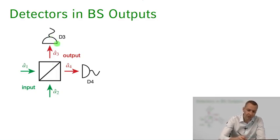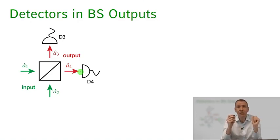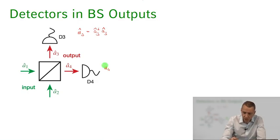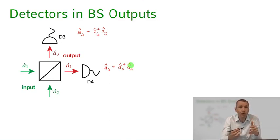We're going to put two photodetectors here: one that measures the photocurrent on detector 3 and one that measures the photocurrent on detector 4. These photocurrents are proportional to the intensity of the light field hitting those photodetectors, which is proportional to the number operators in ports 3 and 4. So the number operator N̂₃ is just A₃†A₃, and N̂₄ is just A₄†A₄. The average photocurrent is proportional to the expectation value of those operators for the input states on the beam splitter.